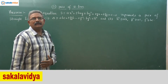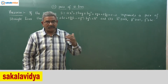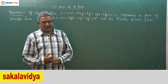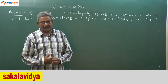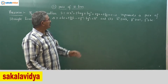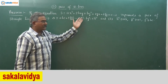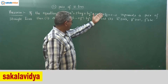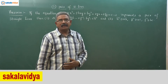Now let us solve a theorem on non-homogeneous pair of straight lines. The non-homogeneous equation is in the form of ax² + 2hxy + by² + 2gx + 2fy + c = 0.